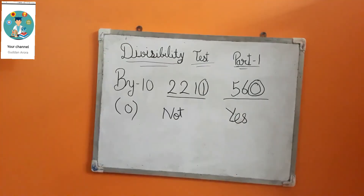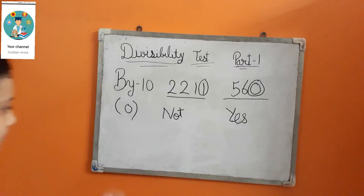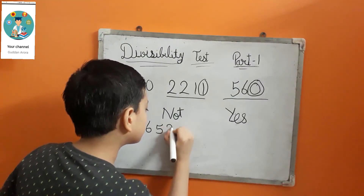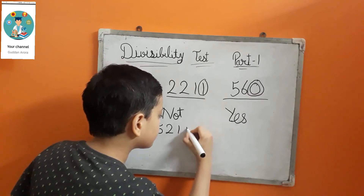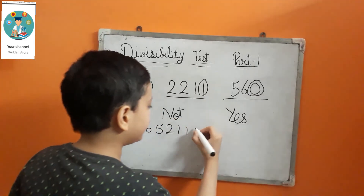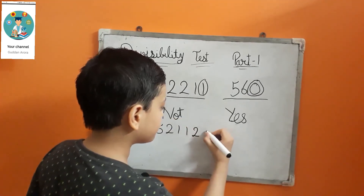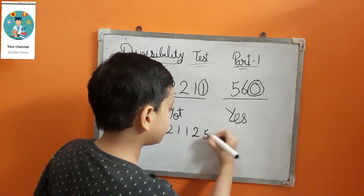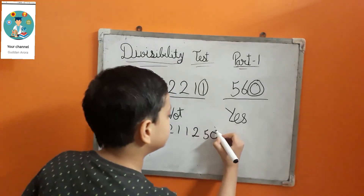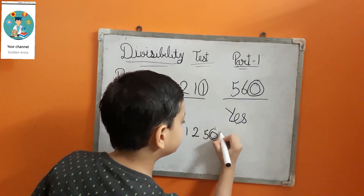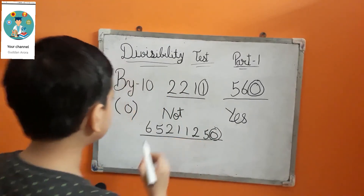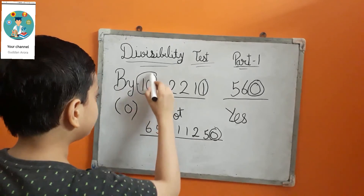Let me take one more example: 65211250. The ones digit is 0, so this number is also divisible by 10.